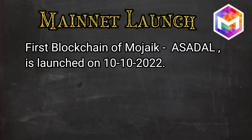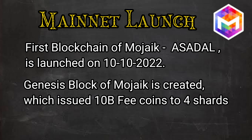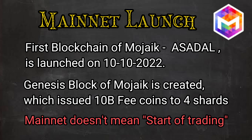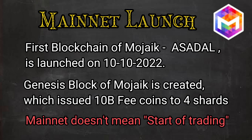As discussed earlier, there will be many blockchains on the Mojak platform. The first blockchain, known as Asadal, is launched on October 10, 2022. The first block of any blockchain is called the Genesis Block. The Genesis Block of Asadal is created, and 10 billion fee coins are sent to all four shards. Please remember that launching a mainnet doesn't mean you can start trading — it is a technical procedure for the development of a network where transmission of cryptocurrencies can be executed. For trading of a coin, it must be listed on crypto exchanges.